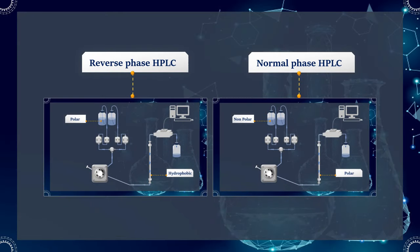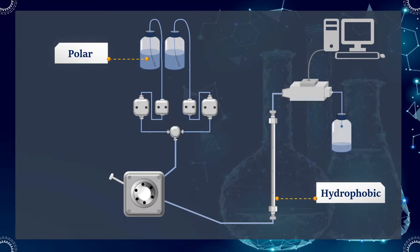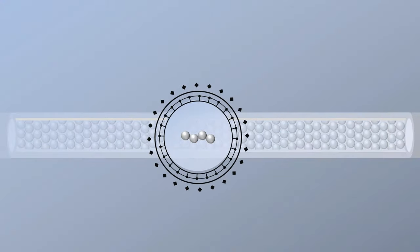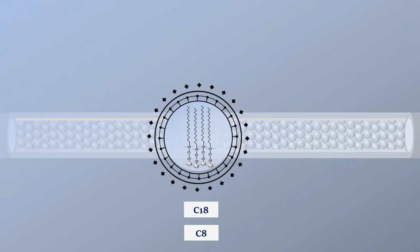There are two main types of HPLC, reverse phase and normal phase. Reversed phase has a non-polar stationary phase and moderately polar mobile phase. One common stationary phase is a silica which has been modified by attaching a straight-chain alkyl group to its surface, such as the octadecyl group, C18, or the octyl group, C8.